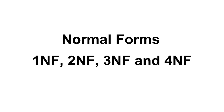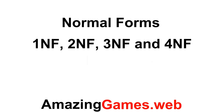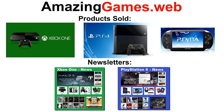This video is about normalizing a database from normal forms 1, 2, 3, and 4. For the example, I mocked up an imaginary company that sells video game consoles. Some of their products are Xbox One from Microsoft, PlayStation 4 from Sony, and the handheld PlayStation called PlayStation Vita from Sony. They also have two newsletters: one for Xbox One new releases and one for PlayStation 4 new releases.